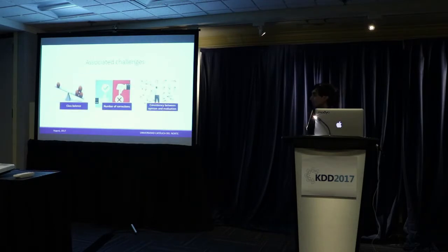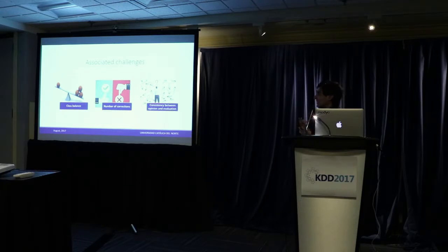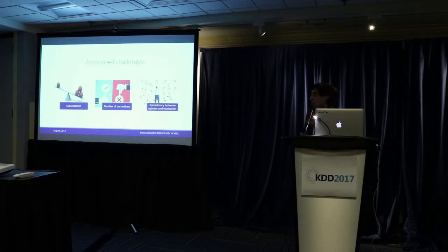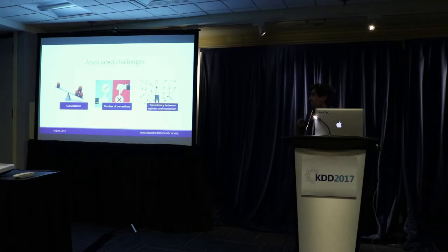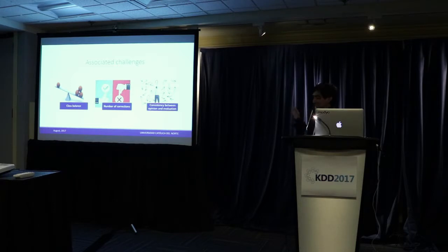What are some associated challenges? We have a problem of class balance, since there is a bias towards negativity in most reviews. There is also a difference in the number of corrections — some reviewers were quite verbose and some were laconic, just saying 'reject this paper.' So we have a varying number of corrections. The main issue is the consistency between opinion and evaluation. Opinion is what the reviewer expresses in the text. For example, if I read a review and it seems clearly accepted, but then the evaluation says 'rejected' — that's the problem.